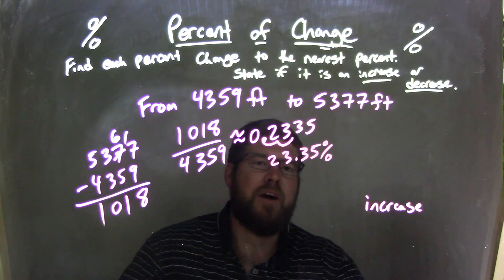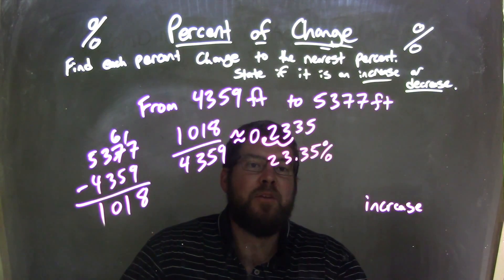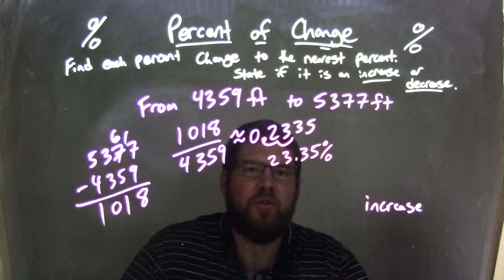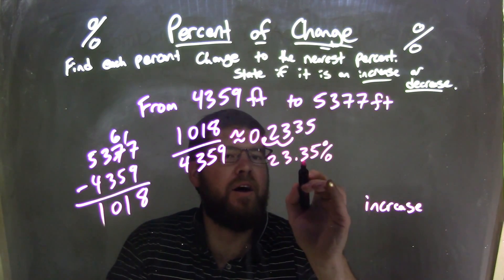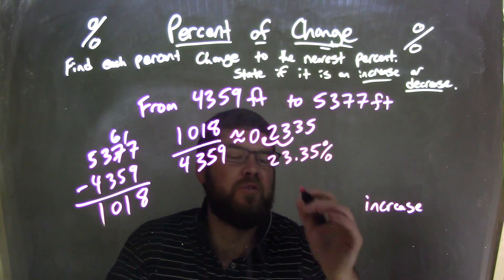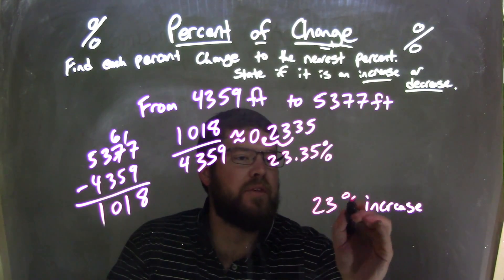So I have 23.35 percent, I need to round to the nearest percent because it asked me to, so that 0.3 right here causes this 3 to round down. So we're left with just a 23 percent increase.